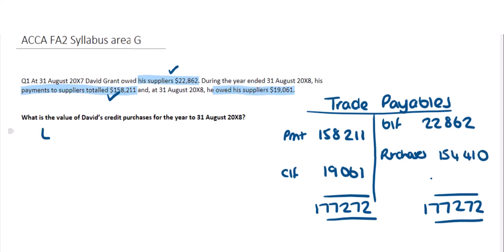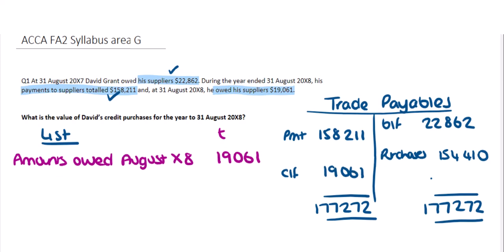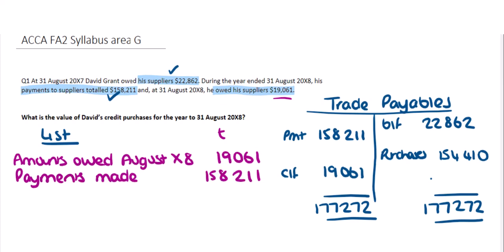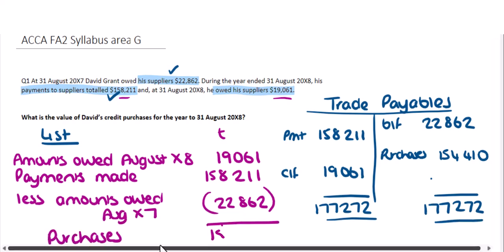You could also do your workings as a list. Start with the amounts owed at the end of the year, which was $19,061. Then add on any payments made to suppliers, which is $158,211. Then deduct the amounts owed at the beginning of the year, and that also gives the purchases figure of $154,410.